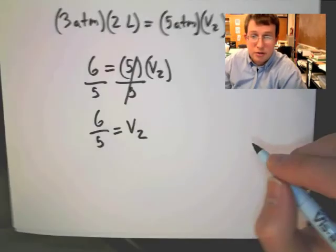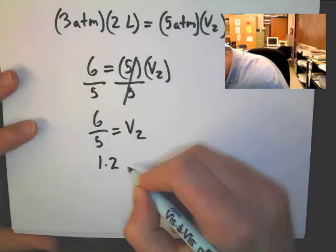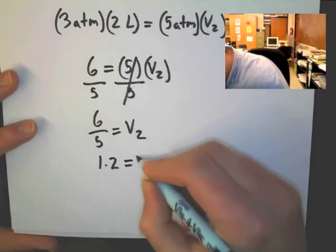Your new equation should look something like this. Finally, all you need to do now is solve 6 divided by 5. And that's equal to V2. That is equal to 1.2. And that's our V2.